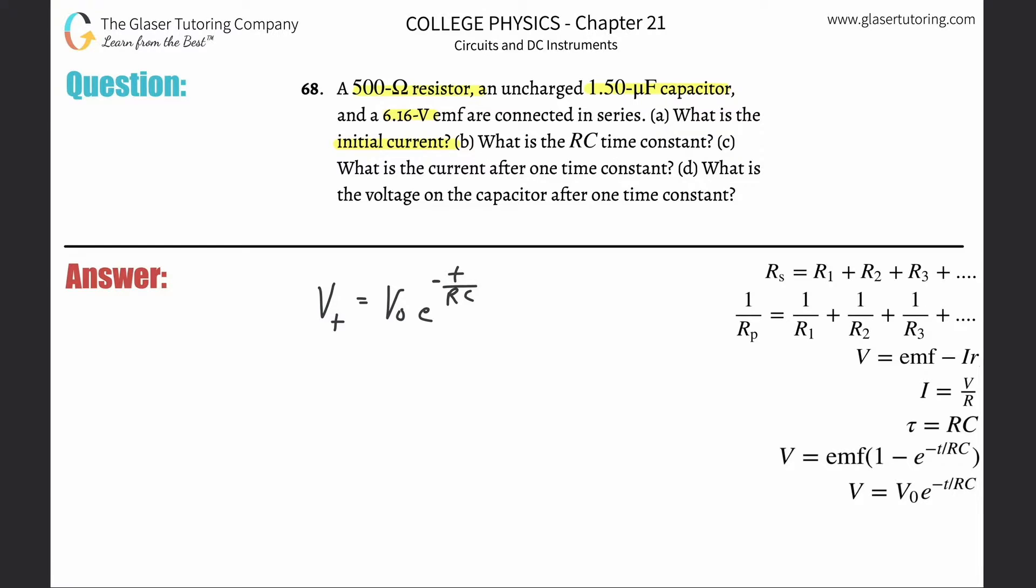That's the formula that's given. So what we're going to have to do is a substitution. Remember Ohm's law that V equals IR. What I can substitute here instead of V sub T is I sub T, the current at some point in time, multiplied by the resistance equals the current initially multiplied by the resistance initially times E raised to the negative T over RC.